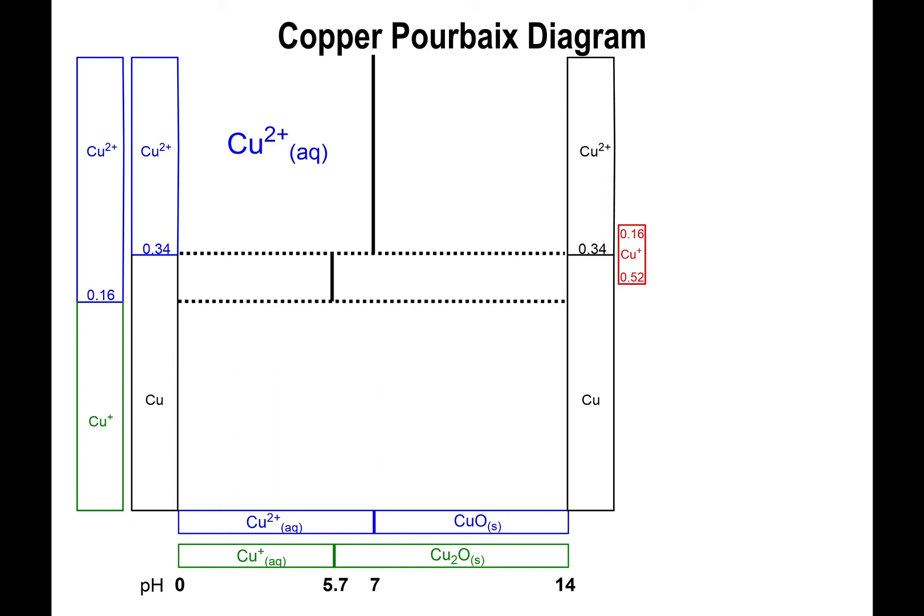All right, so now we start on the upper left portion, which we are guaranteed to have copper 2+. And for copper 2+, we have to examine a few things. We have to examine what happens if we go from copper 2+ directly down but below a pH of 5.7, in which case we will be going to copper 1. Or if we are above the pH of 5.7, we're going to be going from copper 2+ to copper 1 oxide. And the same thing goes for copper 2 oxide. That's going to be going down to copper 1 oxide.